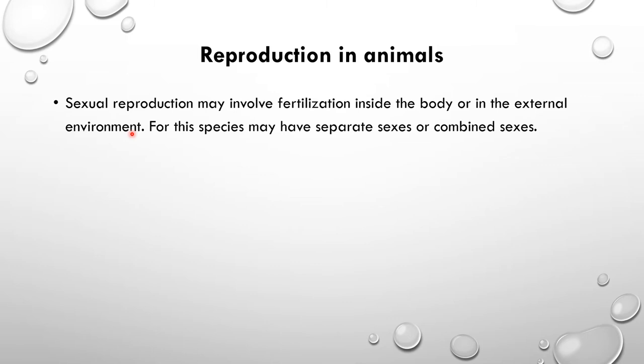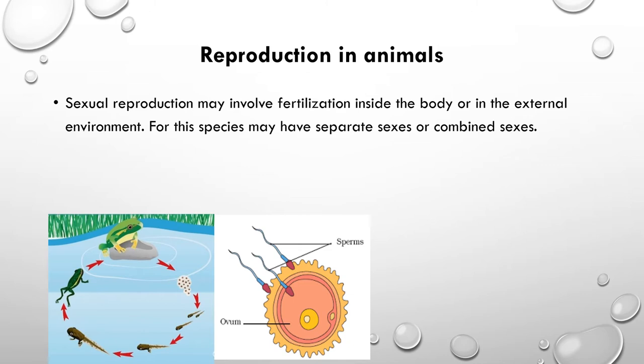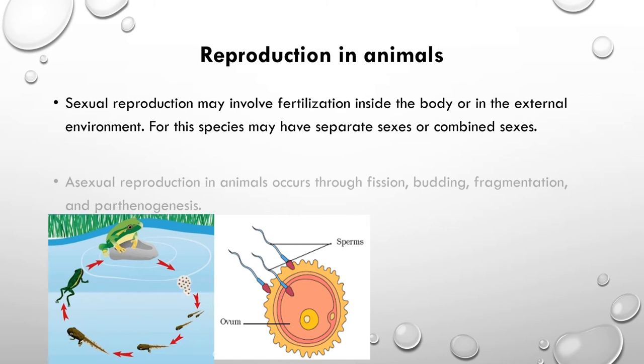For sexual reproduction there should be two organisms of separate sexes, or an organism with combined sexes. In this diagram you can observe the life cycle of the frog, which shows external fertilization, and also how internal fertilization occurs in animals. You will learn more about these things in the next unit, so I'm not going to explain more details regarding sexual reproduction here.